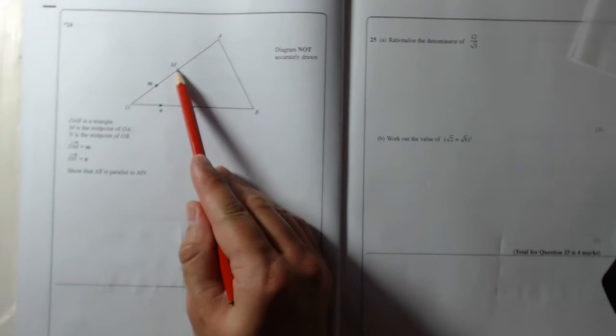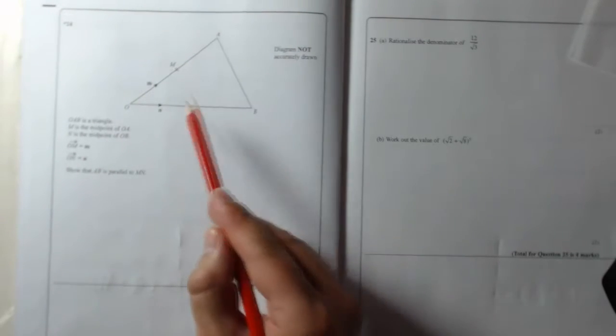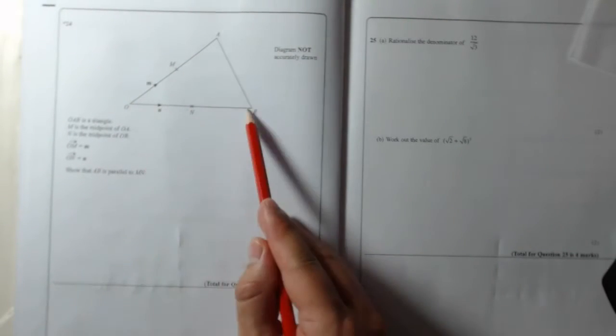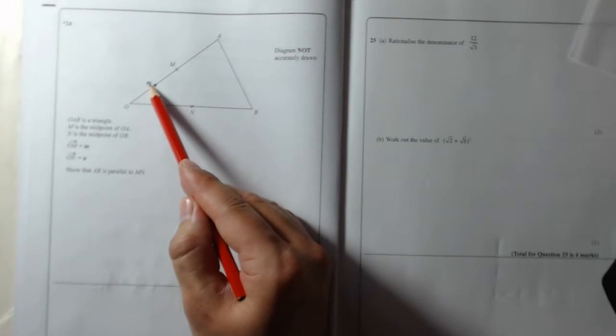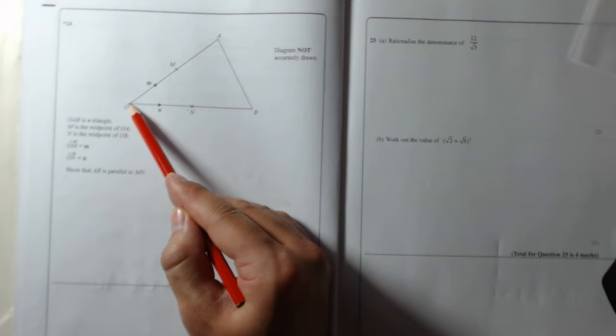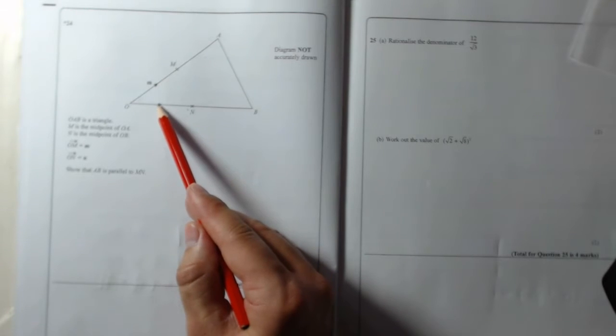Question 24. OAB is a triangle, M is the midpoint of OA, N is the midpoint of OB. OM is equal to vector M, so the distance going that way from O to M and in that direction, that is the vector M. And ON, that is this from O to N.